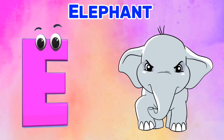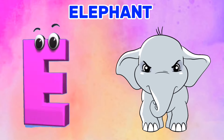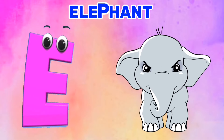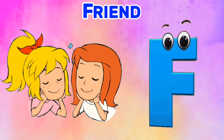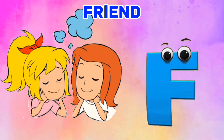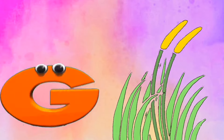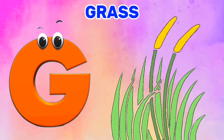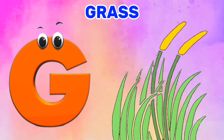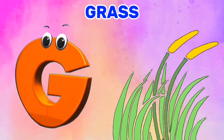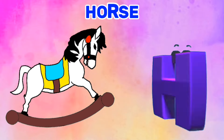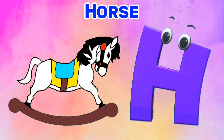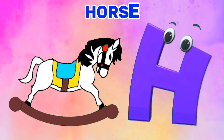E is for Elephant. E, E. Elephant. F is for Friend. F, F. Friend. G is for Grass. G, G. Grass. H is for Horse. H, H. Horse.